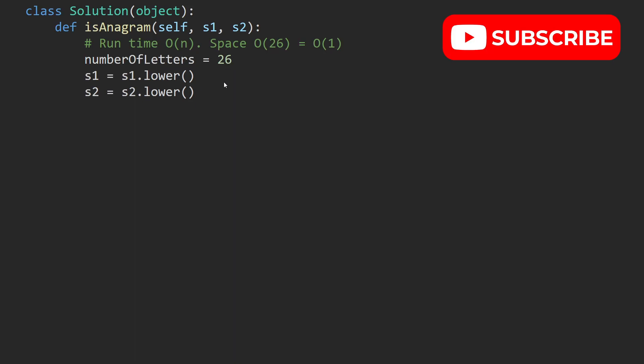Then we also lowercase s1 and s2. We check if the length of s1 is not the same as s2, then they cannot be anagrams, so we have to return false. This line of code here will generate an array of size 26 and fill this array with 0s. So now we have it in the count variable.